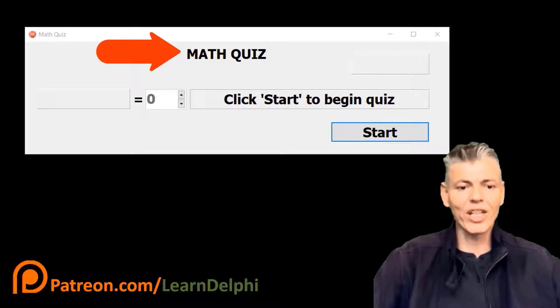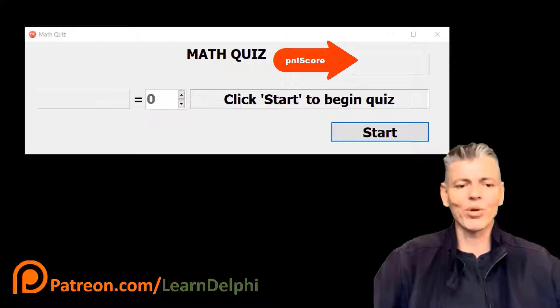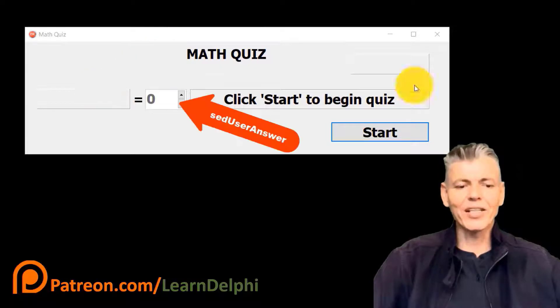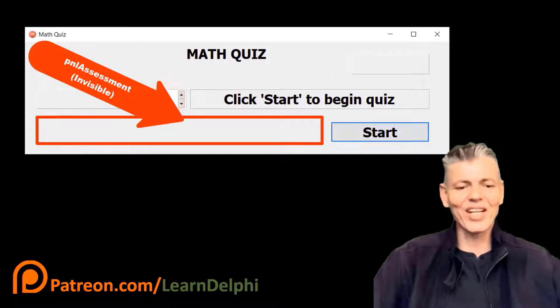This label shows a header when the application starts up. This panel will display your score. Initially, it will be blank. And this panel must display the math question. Initially, it will also be blank. The spin edit is set to zero and it is disabled. And we also have a panel here that will only be visible after you answer 10 questions. Then it will give you a final assessment.